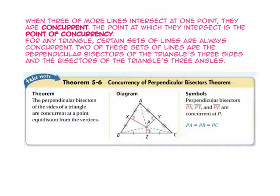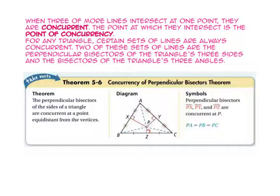When three or more lines intersect at one point, they are concurrent. The point at which they intersect is called the point of concurrency. For any triangle, certain sets of lines are always concurrent. Two of these sets of lines are the perpendicular bisectors of the triangle's three sides and the bisectors of the triangle's three angles.